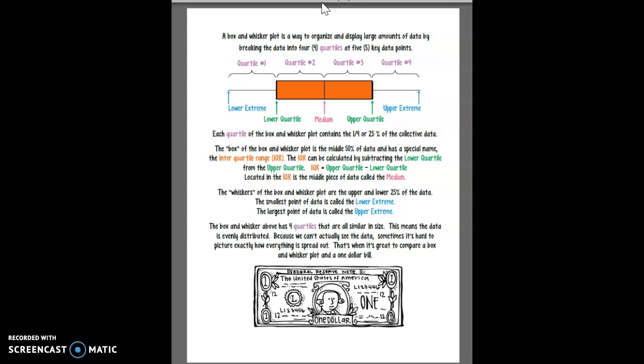So we have our lower extreme. This is our lower quartile or first quartile. This is quartile two, the median which could also be called your second quartile. Your upper quartile which is your third quartile and then your upper extreme.